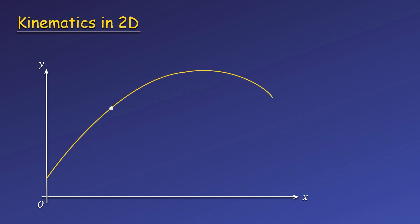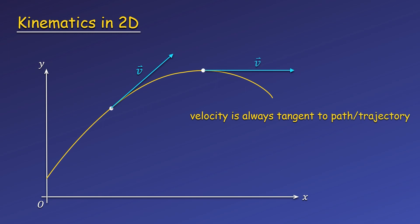Now we can look at the velocity. The velocity at any point is tangent to the path or trajectory of the object, giving the direction the object is moving at the moment it's at that position. At any given point, the velocity may have an x and a y component. Like in one dimension, the average velocity is given by the displacement over time.